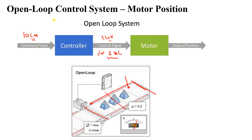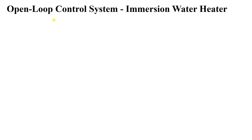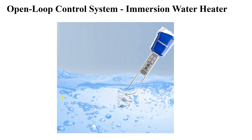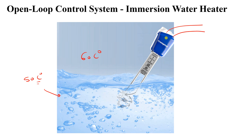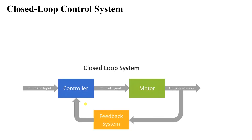Another example is an immersion water heater. If we want to heat water to 50 degrees Celsius, we connect the heater to the supply. It will keep heating even if the water reaches 60 degrees, because there is no feedback from the output — unless there is a timer or you unplug it manually.